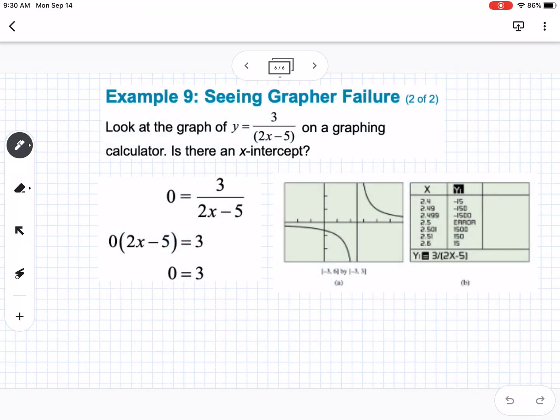Okay, so the last thing is titled seeing a graph for failure. So it says to look at the graph of y equals 3 over 2x minus 5 on a graphing calculator. Is there an x-intercept? So if you look, here's our graph. We can tell, we hopefully, kind of a review from Algebra 2, we know that this is a hyperbola. And we know that that hyperbola is going to approach x but never touch it. And you can tell that by looking at the table here.